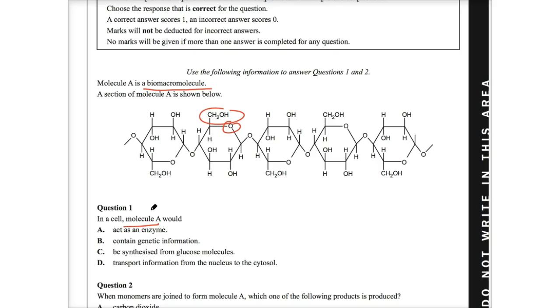So if that's glucose, I want to go through these particular options and assess whether or not they align with the information or the picture that I've given. If A acts as an enzyme, well, we clearly know that's incorrect on the basis that enzymes are protein. B, it contains genetic information. Well, it doesn't given that it's non-nucleic acids, not part of DNA. C, be synthesized from glucose molecules. Well, we have identified that it's glucose. So that looks like to be the winner. D, transport information from the nucleus to the cytosol. We know that that's not the point of glucose. That's moving down the idea of tRNA or messenger RNA as well. I know that C is the answer. It's glucose. 89% of the state got this question correct.